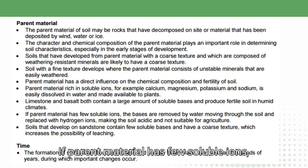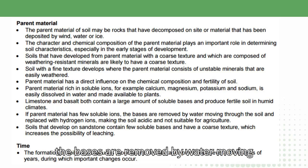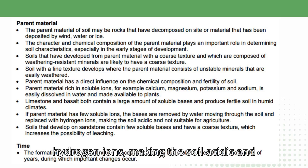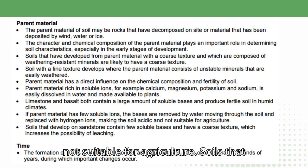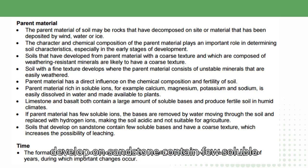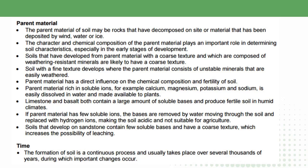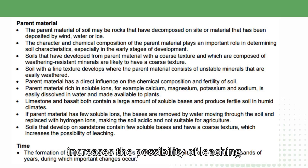If parent material has few soluble ions, the bases are removed by water moving through the soil and replaced with hydrogen ions, making the soil acidic and not suitable for agriculture. Soils that develop on sandstone contain few soluble bases and have a coarse texture, which increases the possibility of leaching.